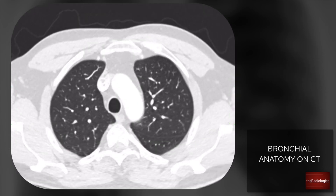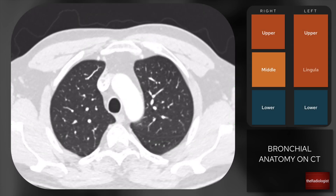Remember the basic anatomy: the right lung has three lobes - upper, middle and lower - whereas the left only has two, upper and lower. The equivalent of the middle lobe on the left is the lingula, which also forms part of the upper lobe.